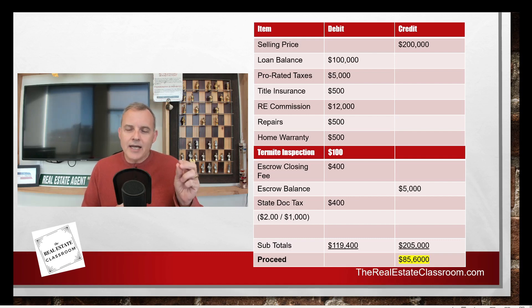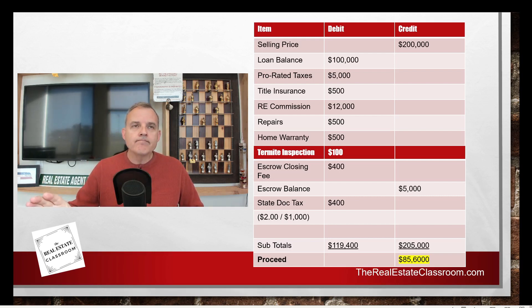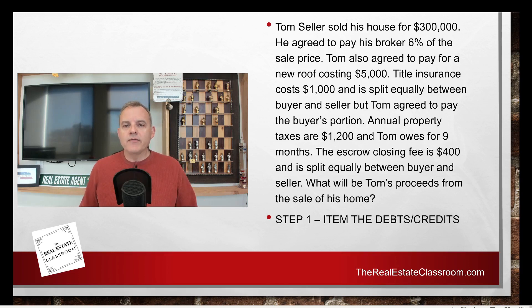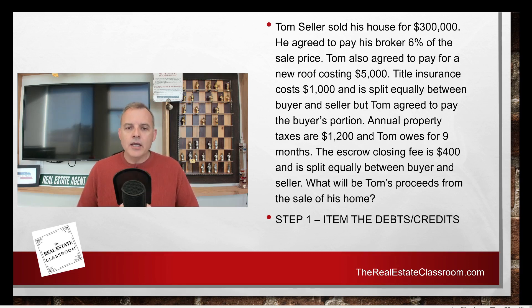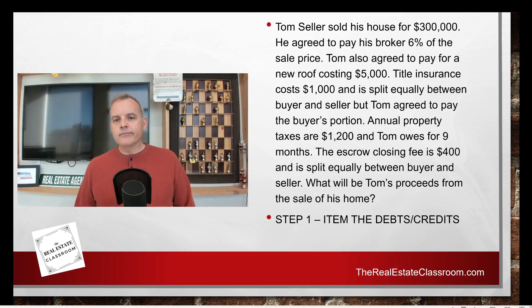That is what a typical seller proceeds statement looks like — it's just a matter of identifying the item and putting it into the correct column, debit or credit. Now let's take a look at a sample real estate exam question regarding seller proceeds. It says: Tom Seller sold his house for $300,000. He agreed to pay his broker 6% of the sale price for the commission. Tom also agreed to pay for a new roof costing $5,000. Title insurance costs $1,000 and is split equally between the buyer and the seller, but Tom agreed to pay the buyer's portion. Annual property taxes are $1,200 and Tom owes for nine months. The escrow closing fee is $400 and is split equally between the buyer and the seller. What will be Tom's proceeds from the sale of his home?